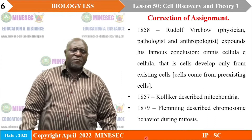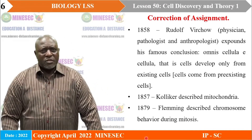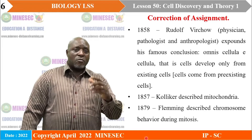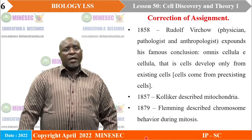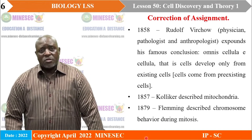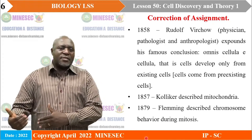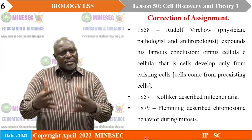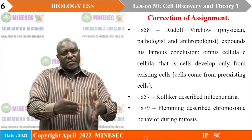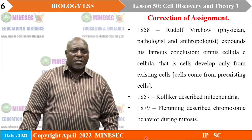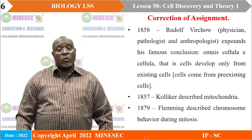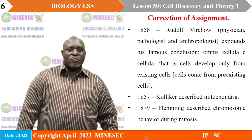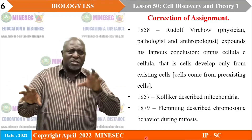In 1858, a physician, pathologist, and anthropologist called Rudolf Virchow expounded his famous conclusion — Omnis cellula e cellula — a publication showing that cells develop from pre-existing cells, meaning cells come from pre-existing cells. So we see that in those long-ago times they found that cells can divide to form other cells. In 1857, Kolliker described the mitochondrion as an organelle, and in 1879, Fleming described chromosomes behaving during mitosis — discovering them in scattered pieces.